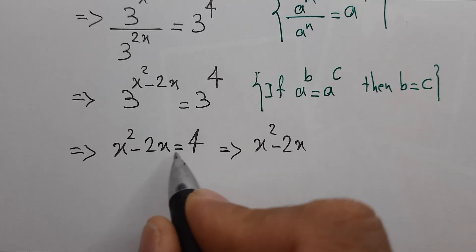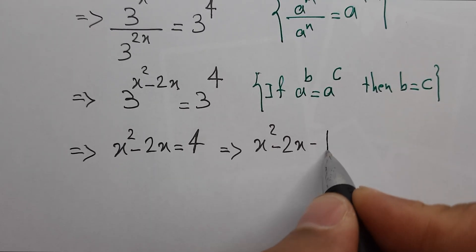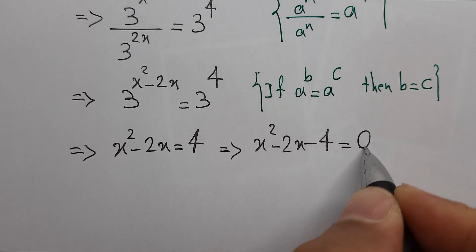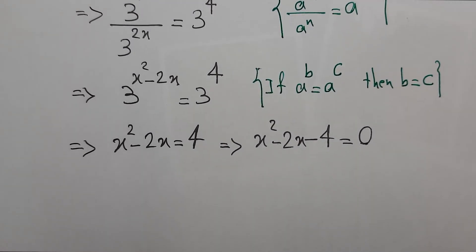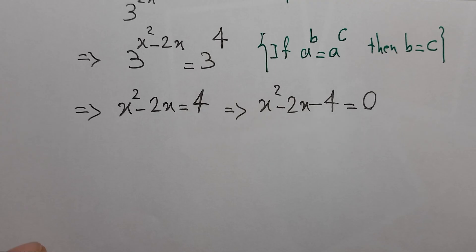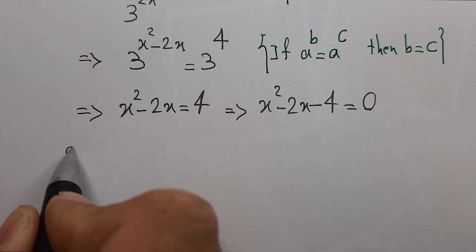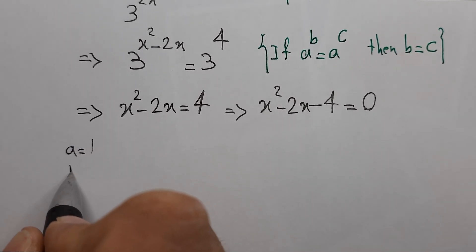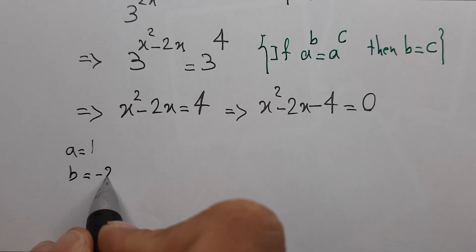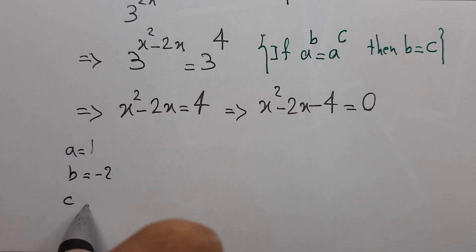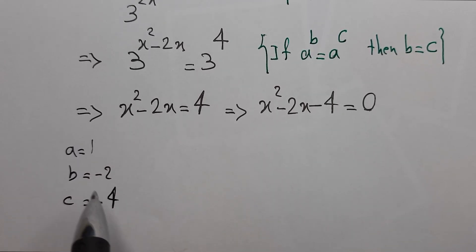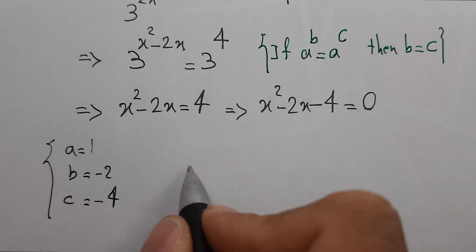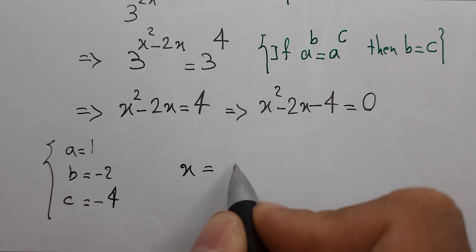Bring 4 to the left side: x squared minus 2x minus 4 equals 0. Here our a is 1, b is minus 2, c is negative 4.